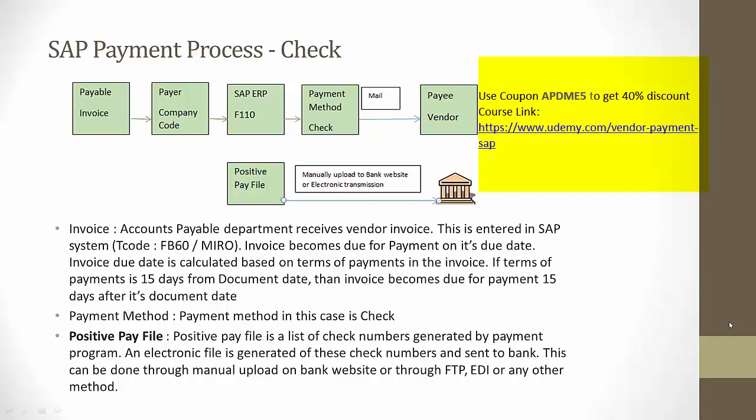The payment program will identify the vendor invoices which are due for payment on the payment run date and generate a list of payment invoices along with the amount due. Once the invoices are approved, the next step is to generate the payment media. When the payment method is cheque, the payment program will print the checks, which are then couriered to the vendor.